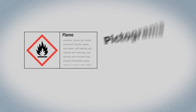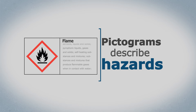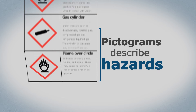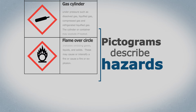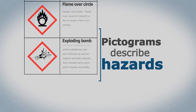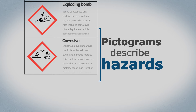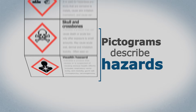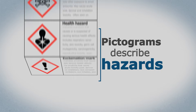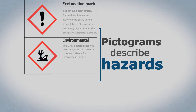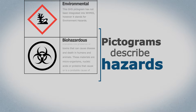Other pictograms describe different hazards, including compressed gases, oxidizing hazards, explosive or reactive substances, corrosive materials, acute toxins, serious health hazards, irritants, environmental hazards, and infectious materials.